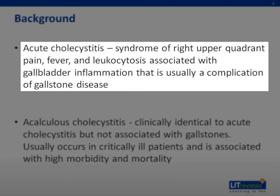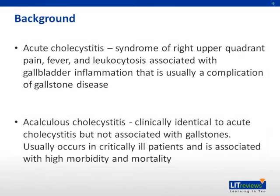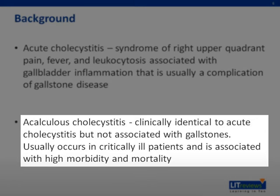Acute cholecystitis is inflammation of the gallbladder, resulting in a clinical syndrome of right upper quadrant pain, fever, and leukocytosis, and is a common complication of cholelithiasis. Most patients with gallstones are asymptomatic. Biliary colic develops in about 1% to 4% annually, and acute cholecystitis eventually develops in about 20% of these symptomatic patients if left untreated. Acute cholecystitis may also occur in the absence of underlying gallstone disease, but these make up a minority of cases.